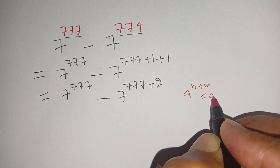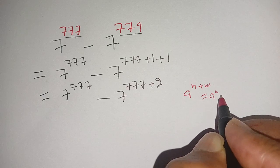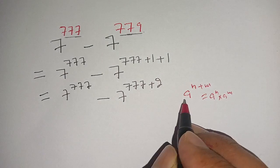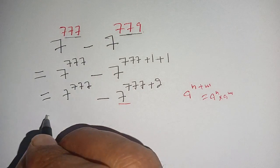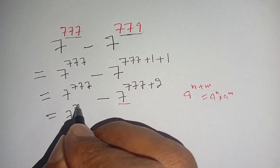The same rule applies here, so we get 7^777 minus 7^777 times 7^2.